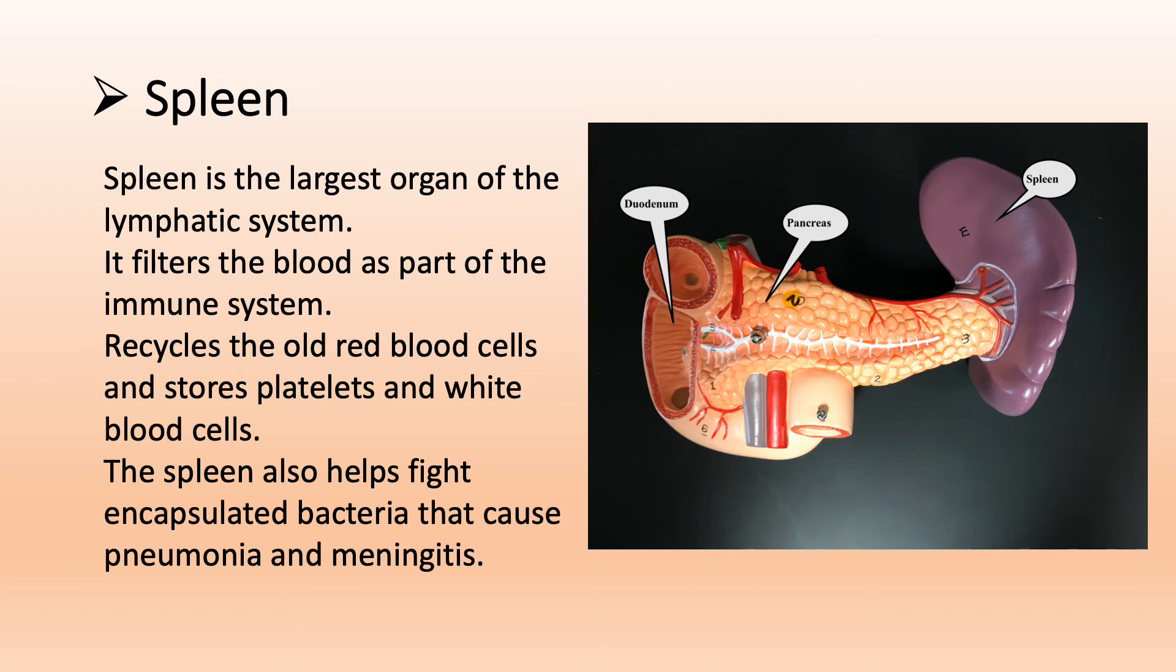Spleen is the largest organ of the lymphatic system. It filters the blood as part of the immune system, recycles old red blood cells, and stores platelets and white blood cells. The spleen also helps fight encapsulated bacteria that cause pneumonia and meningitis.